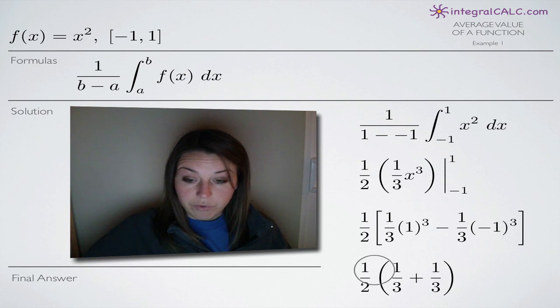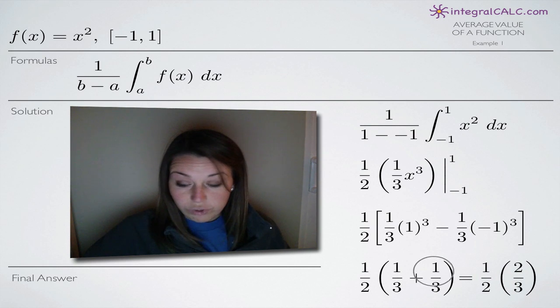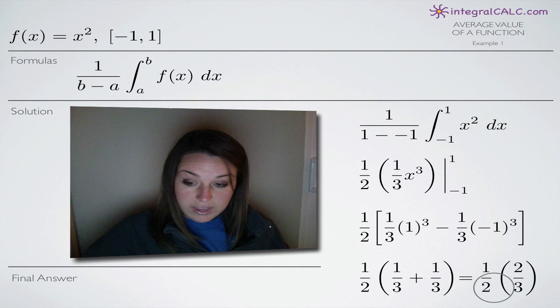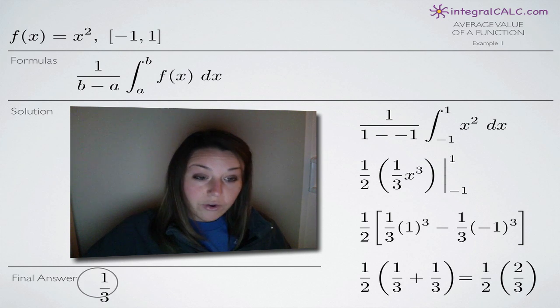And so we'll have 1 half times 2 thirds. And as you can see, the 2's are going to cancel. And our final answer will be 1 third.